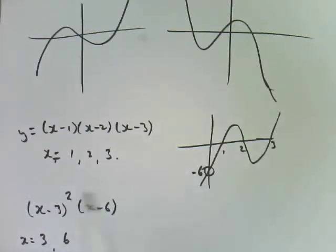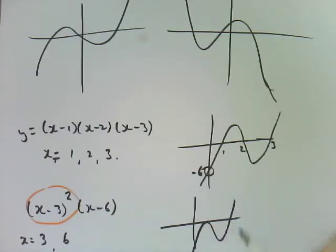When you've got a square, when you've got 1 intercept squared like we have there, it means it touches at that point. So when I sketch this graph, it's positive again. It's going to come up, it's going to touch at 3 and go back through 6. So here's 3, here's 6.